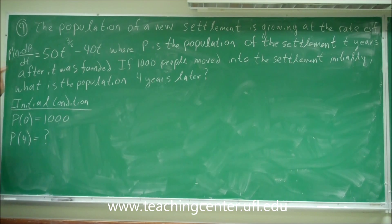To find p of t, we need to take the antiderivative. So we need to take the antiderivative here. But when we take the antiderivative, we're going to get a constant at the end. But with that constant, we can use this initial condition to find that constant. So let's go ahead.